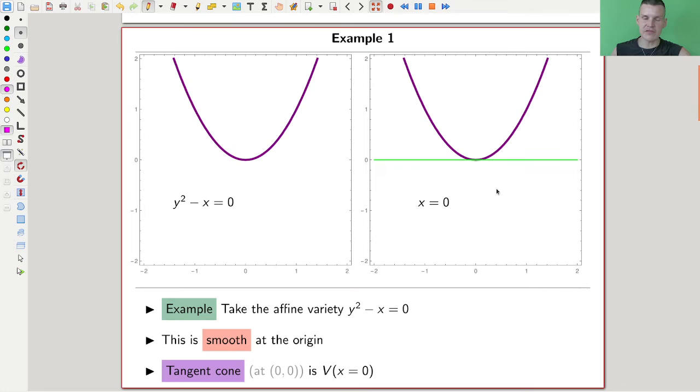There are three different types of examples. The first type is something that is smooth anyway, like a parabola, and the tangent cone is just the tangent. We'll be more precise in a later video, but for now it's just what it is.